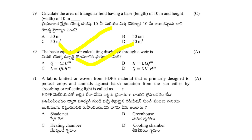A fabric woven from HDPE material that is primarily designed to protect crops and animals against harsh radiation from the sun, either by absorbing or reflecting light, is called: shade net, greenhouse, heating chamber, or cooling chamber. The answer is shade net.